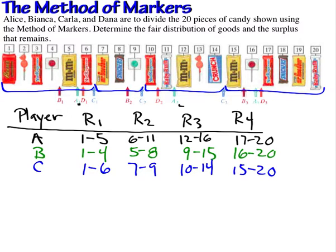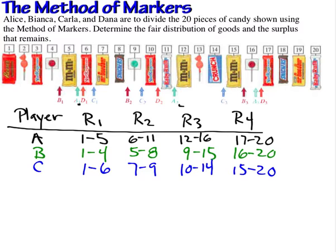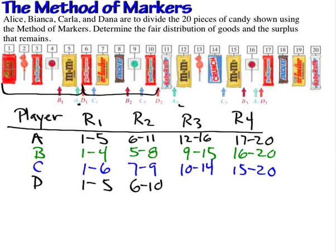Now we do this for our fourth player, Dana. Dana's first fair share is items 1 through 5. Player D's second fair share is 6 through 10. The third fair share includes items 11 through 16. And the fourth fair share is items 17 through 20.